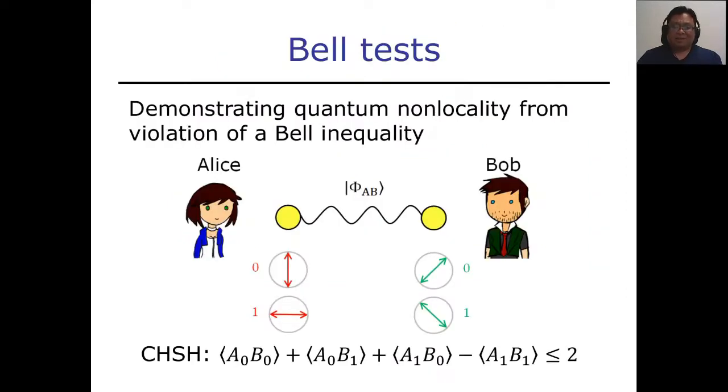A Bell test is an experiment that is used to demonstrate the violation of a Bell inequality. In the simplest case, we have two parties, Alice and Bob, who share some entangled state. Each party will perform two measurements, where each measurement has two outcomes. This leads to some quantum correlation, and then you can check whether it violates the CHSH inequality or not.